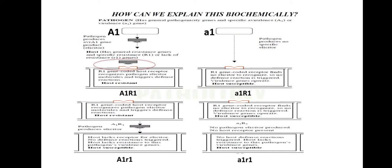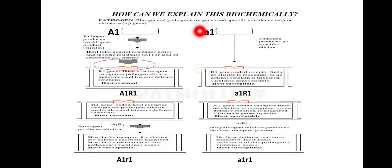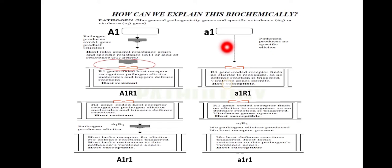Now let's discuss the Flor hypothesis at the biochemical level. Consider two pathogens with different genetic backgrounds: one having capital A1 or a dominant AVR gene, and another having small A1 meaning AVR is in a recessive condition. The capital A1 condition produces specific elicitors or effectors that can be recognized by the resistant gene in the plant — that pathogen is called an AVR pathogen. The small A1 or recessive one does not produce any specific elicitors or effectors recognizable by the R gene — that pathogen is called a virulent pathogen.